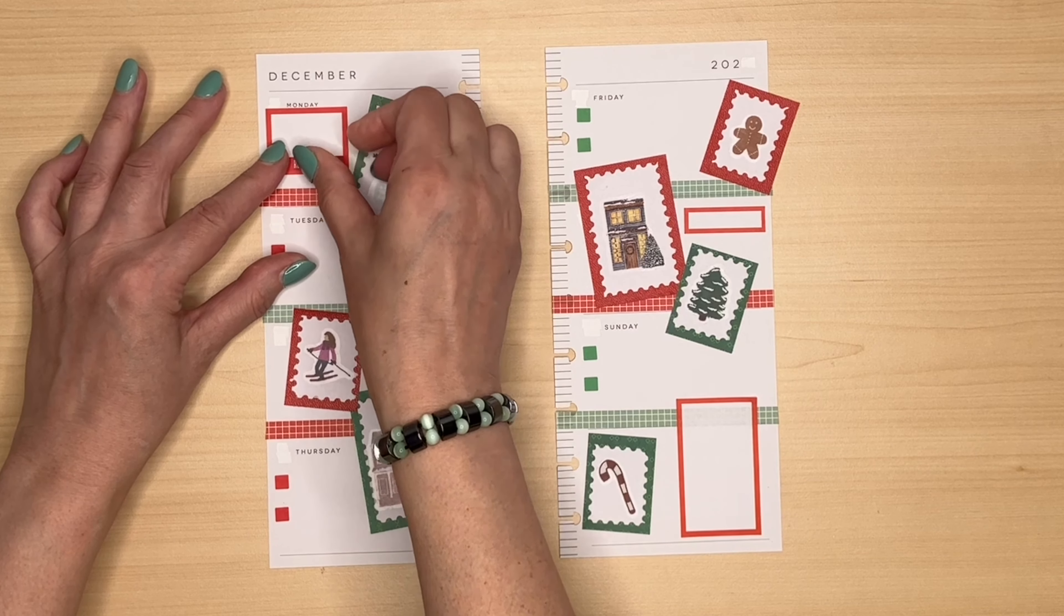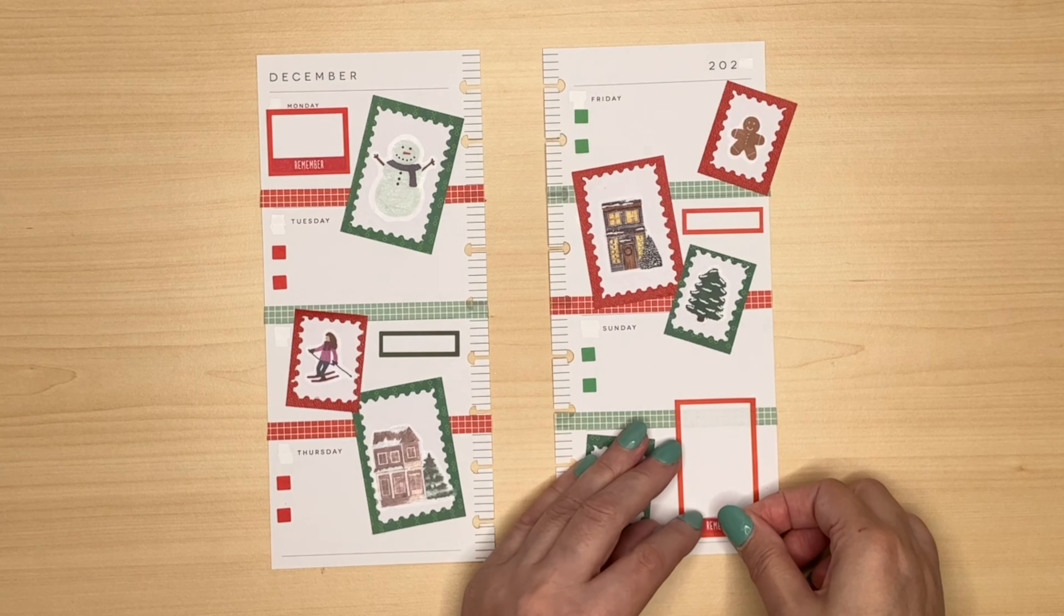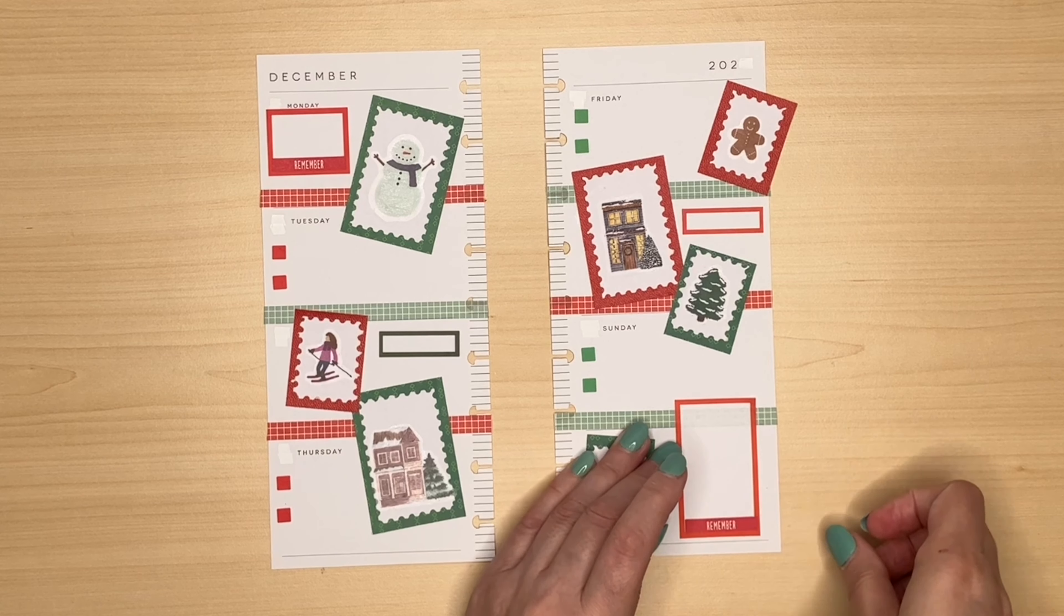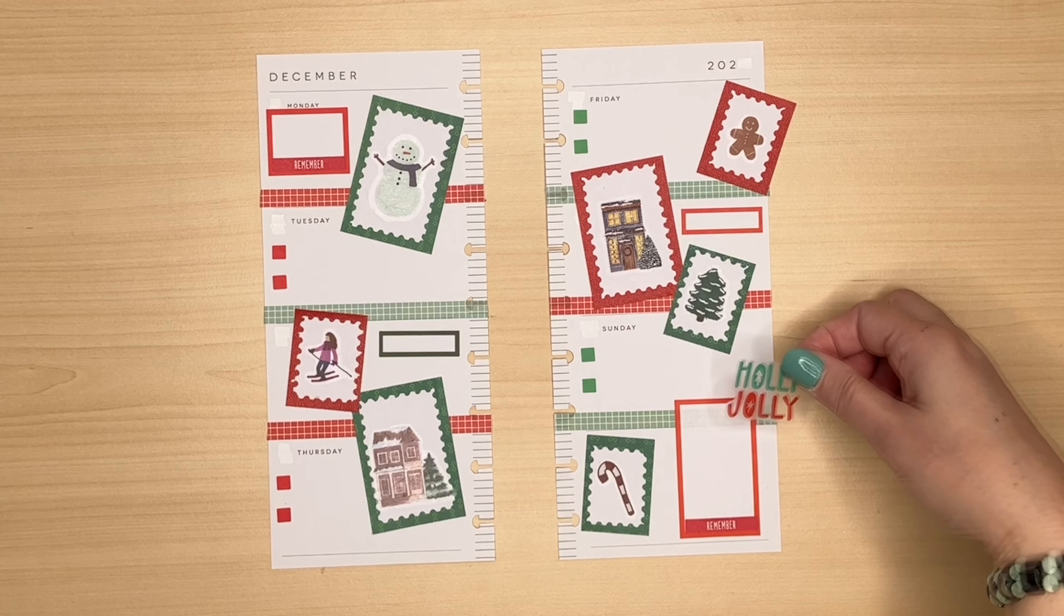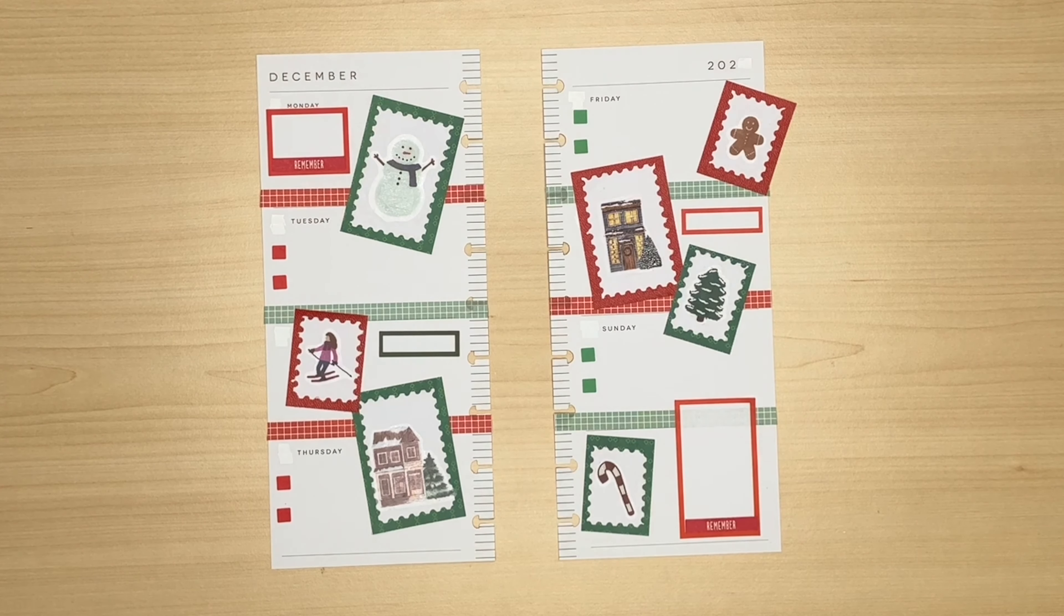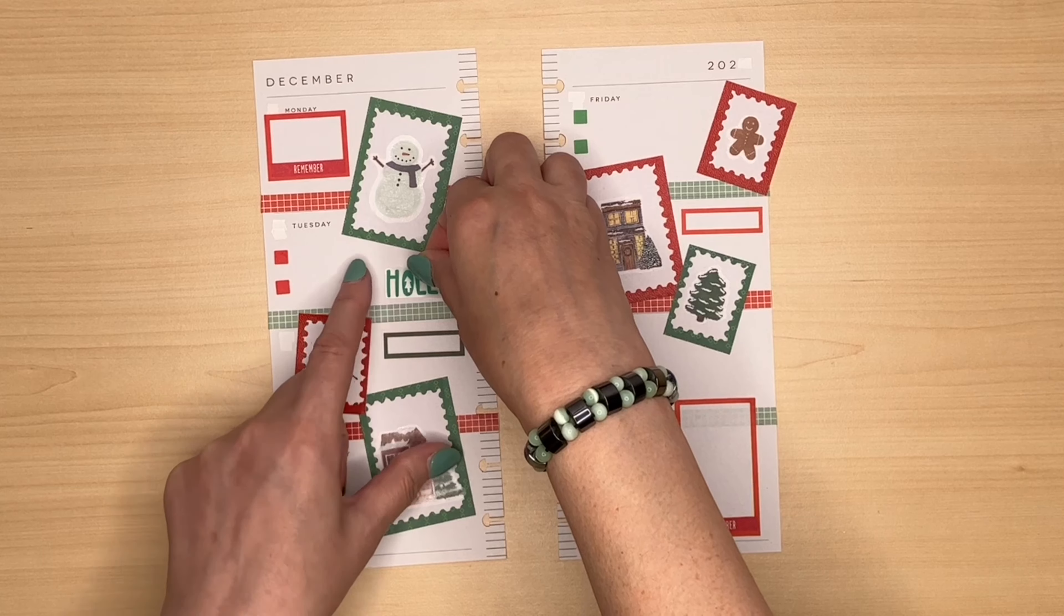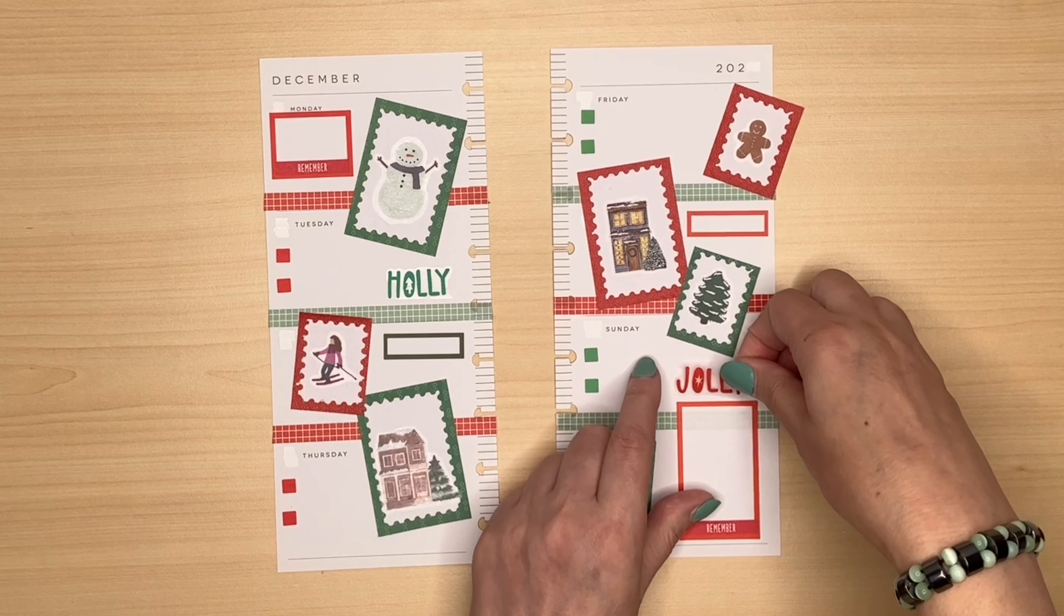I really love how this spread is looking. Very Christmassy and fun. I'm just going to finish it off with a couple of American Craft stickers that say Remember in the boxes. And I have this Holly Jolly which matches perfectly with the colours. It came from an old American Crafts seasonal book.